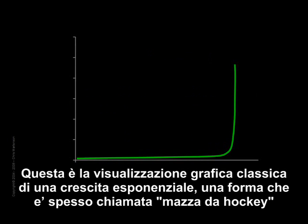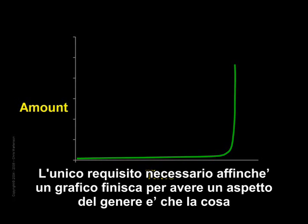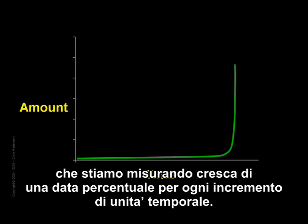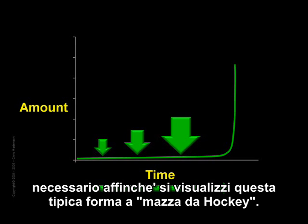Here's a classic chart displaying exponential growth, a chart pattern that is often called a hockey stick. We are charting an amount of something over time. The only requirement for a graph to end up looking like this is that the thing being measured grows by some percentage over each increment of time. The slower the percentage rate of growth, the greater the length of time we need to chart in order to visually see this hockey stick shape.